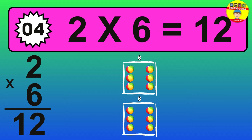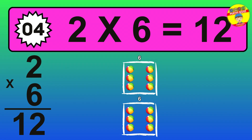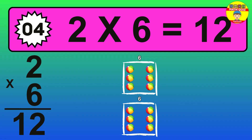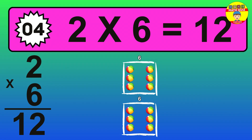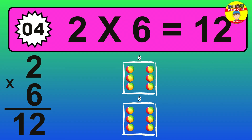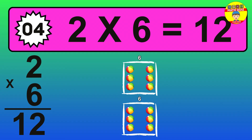The answer is 2 times 6 is 12. To calculate, we have 2 groups with 6 balls each one. So, how many balls do we have? 12 balls.